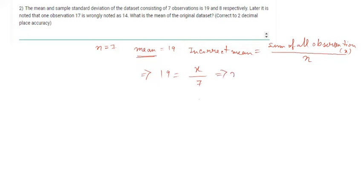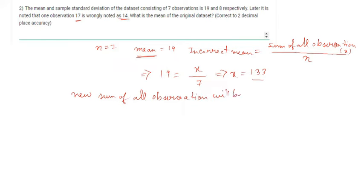Since one observation 17 was wrongly noted as 14, we subtract 14 from 133 and add 17. The new sum of all observations is 133 minus 14 plus 17, which equals 136. Therefore the mean of the original data set is 136 divided by 7, which equals 19.43. This is the answer: 19.43.